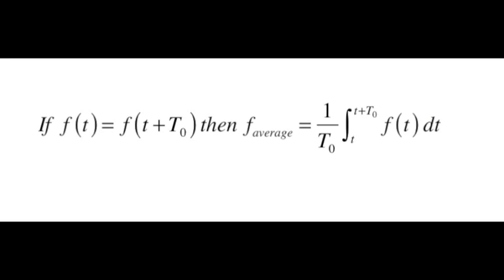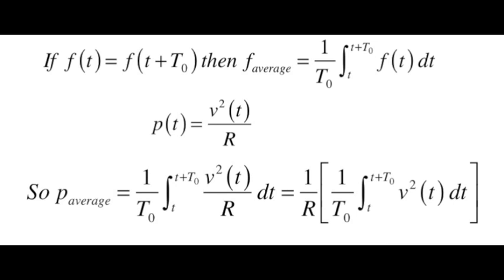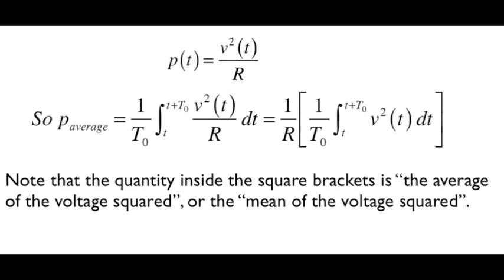For a general periodic function of time, say f of t, we may find the average by integrating the function over one period of time and then dividing that integral by the period. In our case, the function of time is power, p of t. Power as a function of time is equal to 1 over R times the voltage squared. So to find power average, we multiply 1 over R times the integral of V squared through one complete cycle times the quantity 1 over the time period. The quantity inside those square brackets is the average of the voltage squared, or the mean of the voltage squared.